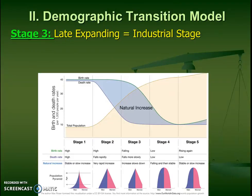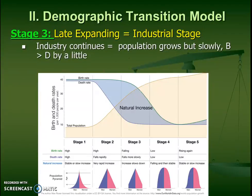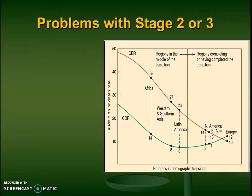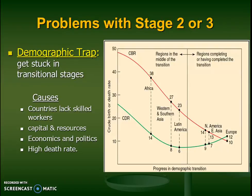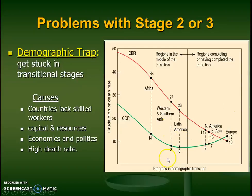In stage three, we're starting to get industrialized. We would call this a transitioning nation — pretty much mostly LEDC and MEDC mixed, depending on where we're looking within that nation. Industry is continuing, birth rate is starting to decrease, and death rate is kind of stabilizing. But we focus on stage three so much because a lot of countries get stuck in this area — the demographic trap. The reason why is maybe there's not enough education, not enough skilled workers, not enough resources — financial, energy, water, or food — or for one reason or another there's illness and death rate might still be high.